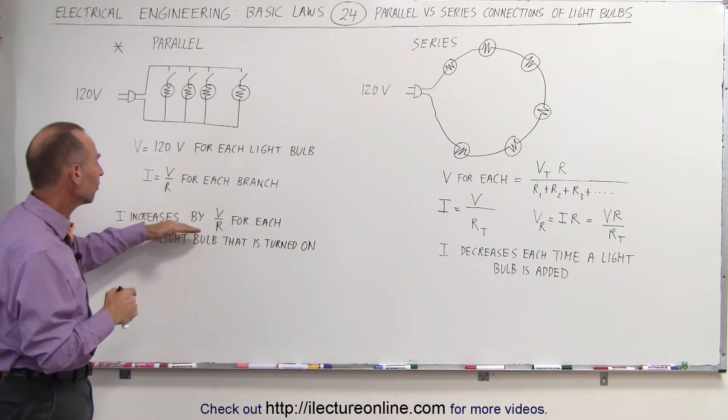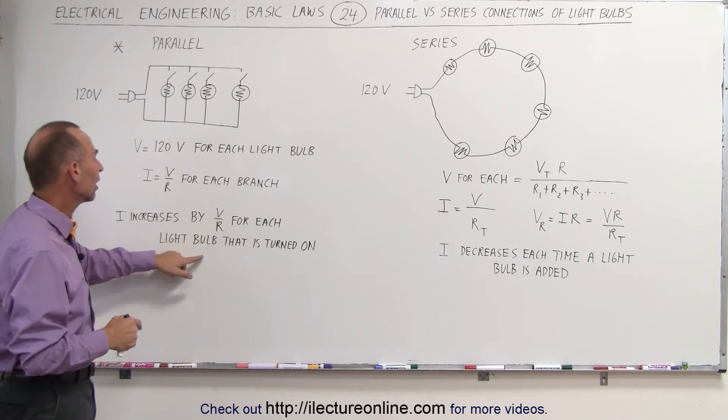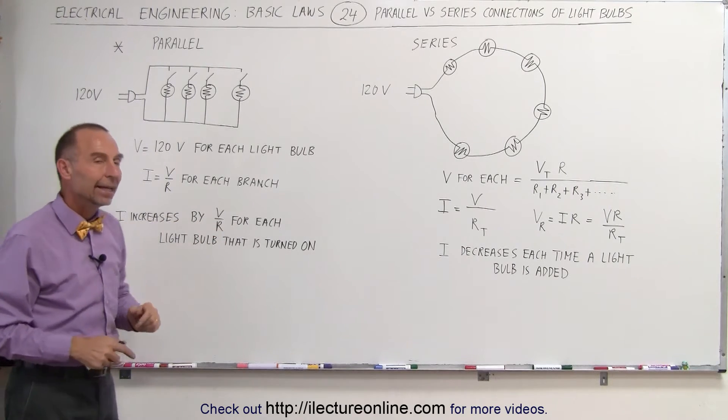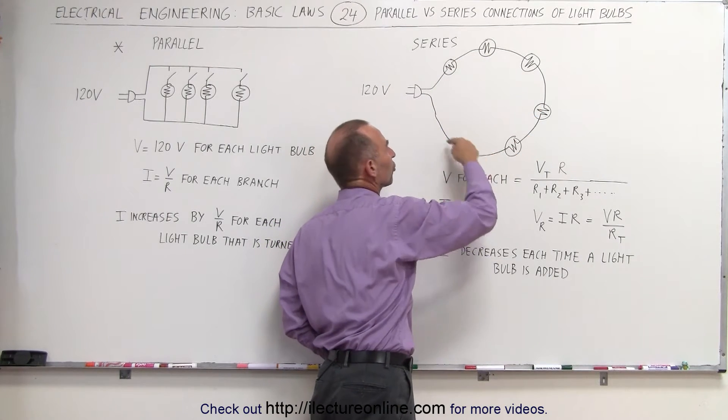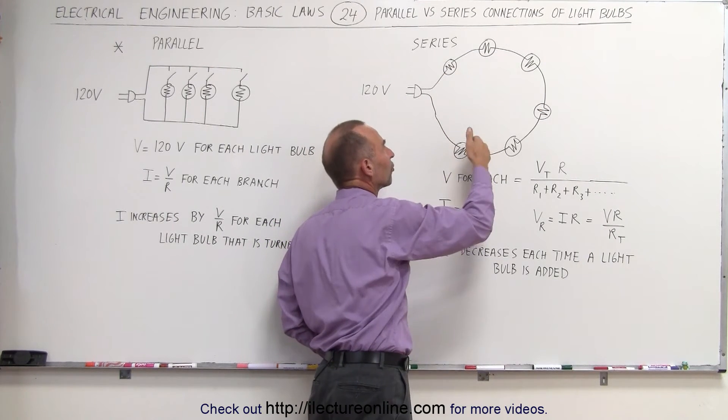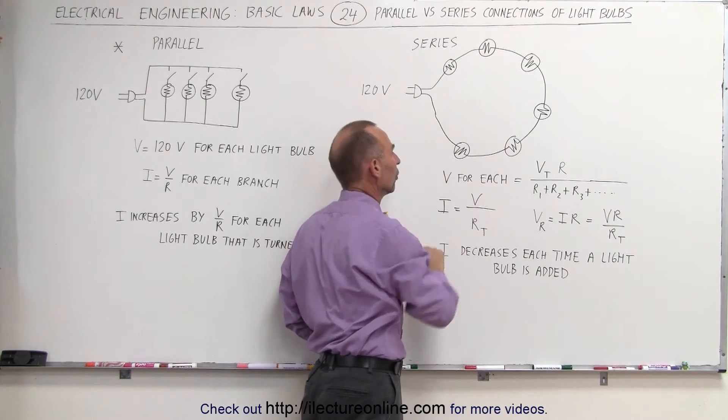Notice the current increases by V over R for each light bulb that is turned on. In a series connection, it's very different. Notice that the more light bulbs you put on your circuit, the higher the resistance of your circuit and the lower the current. Also,